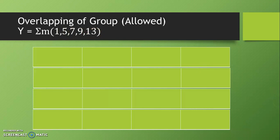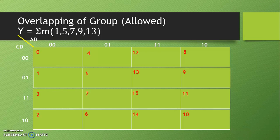So it is a boolean function with 4 variables. We have to prepare K-map with total 16 cells. We write ABCD variables and give numbers 00 01 11 10 on both sides, and give decimal equivalent numbers from 0 to 15. Now we write 1 as per the given boolean function for minterms 1, 5, 7, 9 and 13. In all other cells we write 0s.